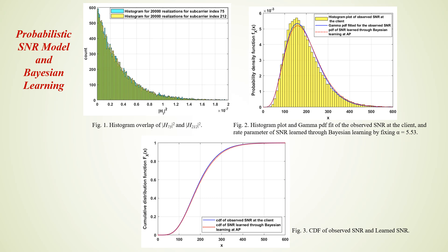Fixing the shape parameter alpha and learning the rate parameter R through Bayesian learning resulted in an excellent match with the experimentally observed receiver SNR histogram and its gamma fitted PDF. The blue curve is the gamma fitted PDF for the observed SNR at the receiver, and the red curve is the PDF of the SNR learned through Bayesian learning at the access point. Figure 3 shows the CDF of the observed SNR at the client and the CDF of the learned SNR through Bayesian learning at the end of the model generation phase.